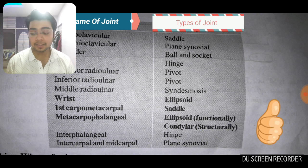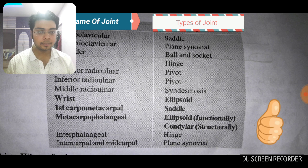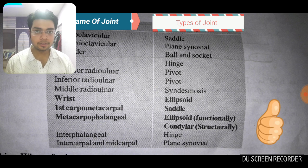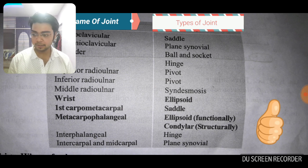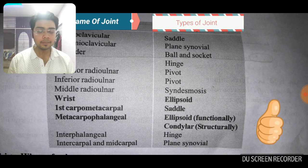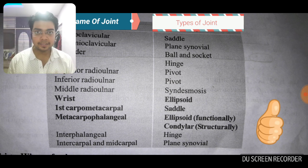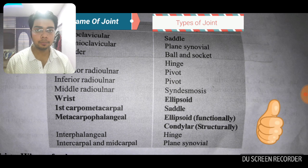There are two types of cartilaginous joints. Syndesmosis is basically a fibrous joint, and there are three types of fibrous joints: the sutures, syndesmosis, and the gomphoses that are present in our teeth. The superior radio-ulnar joint and the inferior radio-ulnar joint are both pivot joints, but in the middle it is syndesmosis.